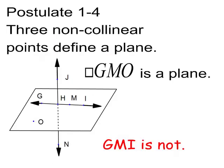And then postulate 1-4: three non-collinear points define a plane. We've already heard that before in this lesson. Now it's a postulate. Three non-collinear points define a plane. So, plane GMO, those are three non-collinear points. That's a plane. But GMI is not a plane because GMI, they lie on the plane, but those are all collinear points. So you can't, that's not acceptable to use to designate the plane. They've got to be three non-collinear points that lie on the plane.